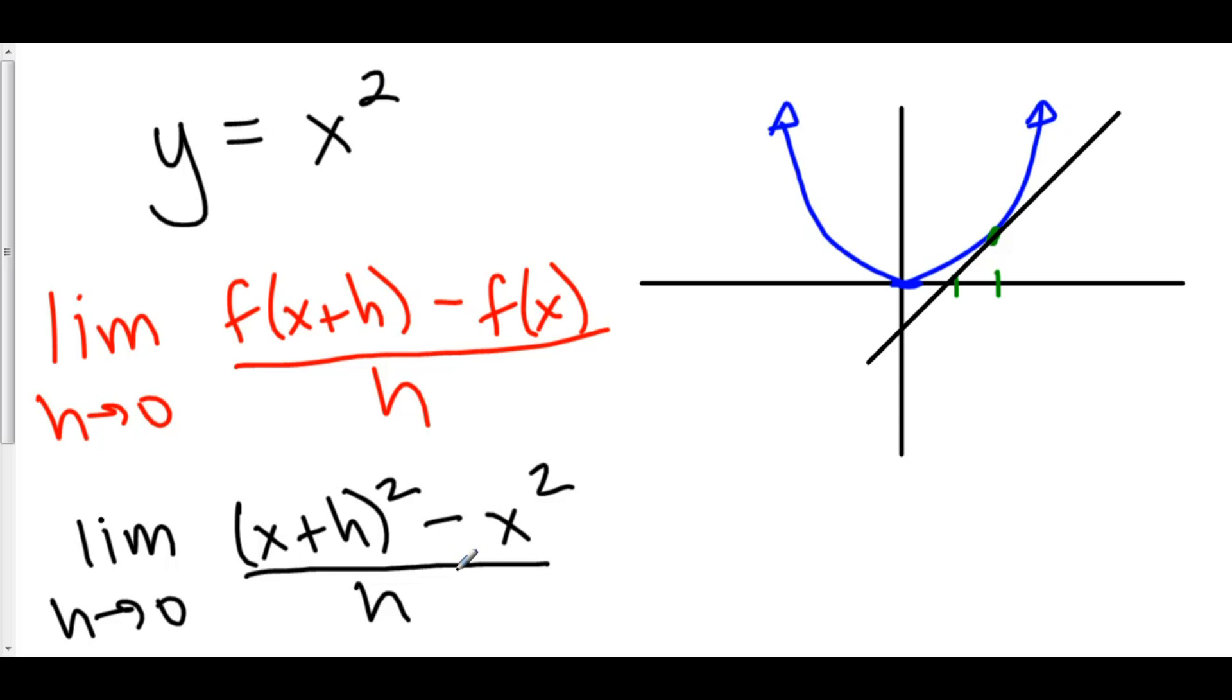If we use our limits analysis, first we can plug in 0 into h, and you realize that you get x squared minus x squared, that's 0 over 0. That's not going to work. We can't just plug in 0. It would be wonderful if that was the case, but it's not.